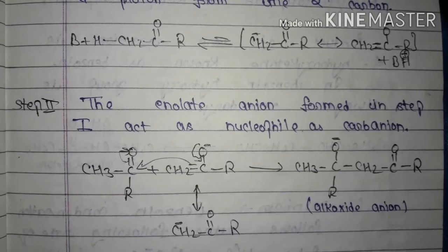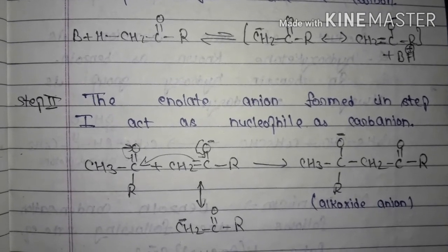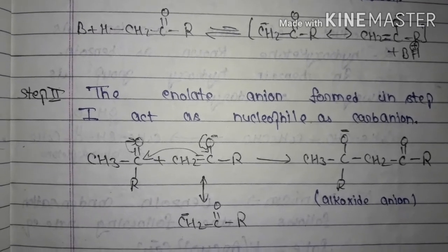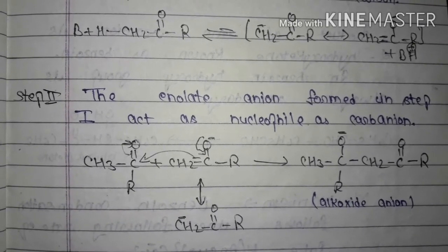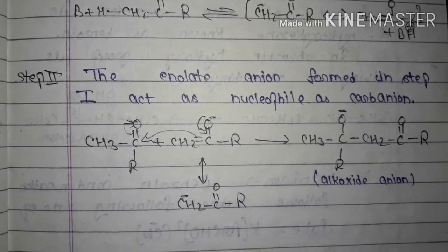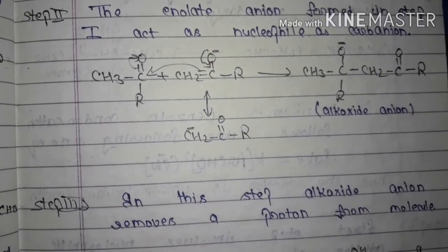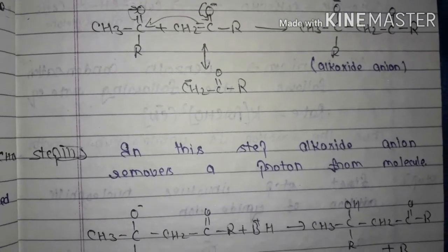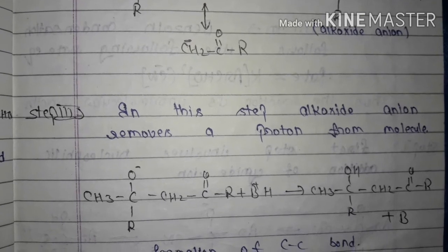Step two: the enolate anion formed in step one acts as a nucleophile — as a carbanion. The enolate formed in the first step behaves as a nucleophile, i.e., as a carbanion. CH3-C=O reacts with CH2=C-OR to give the alkoxide anion as the product.